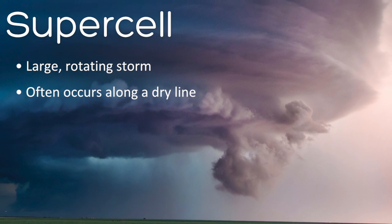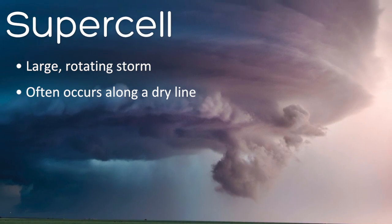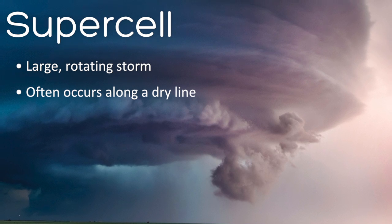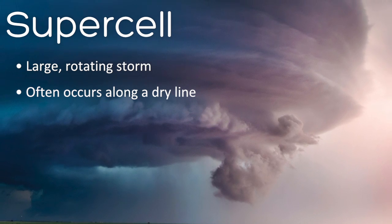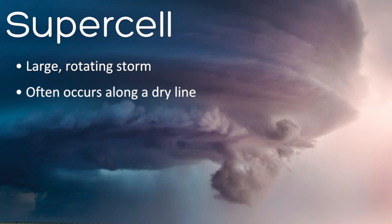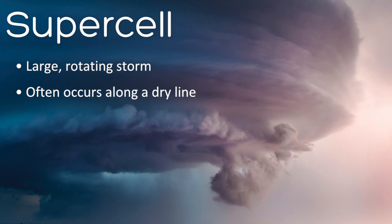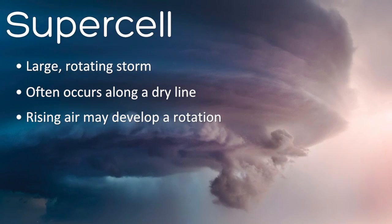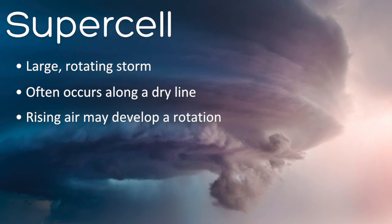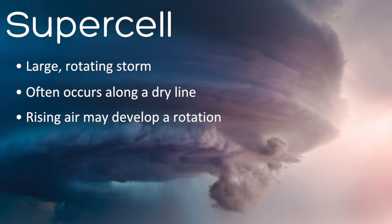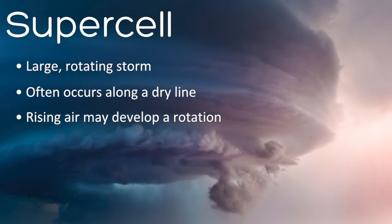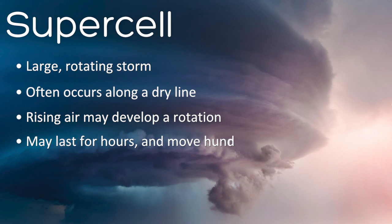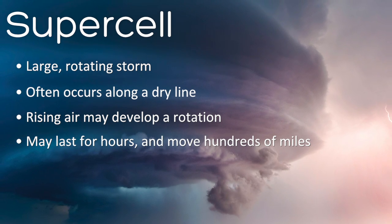These two air masses may get squeezed together, causing the hot, dry air to override the warm, moist air, which stops the warm, moist air from rising. If the two air masses are further pushed together, the warm, moist air may push through the hot, dry air, which then rises rapidly. This rising air may develop a rotation as it goes through areas where the surrounding winds are moving in different directions. Once these conditions are in place, a supercell may last for hours and move hundreds of miles.